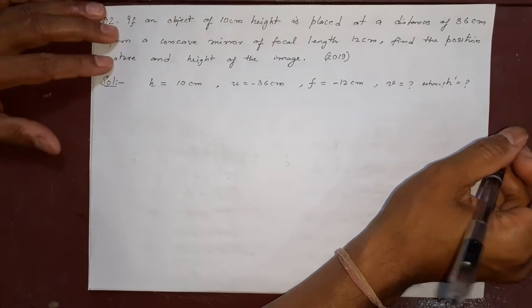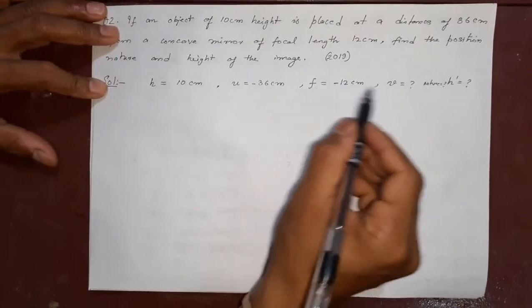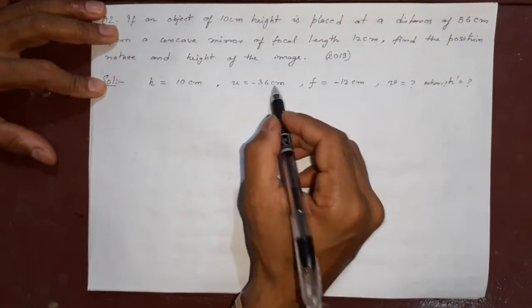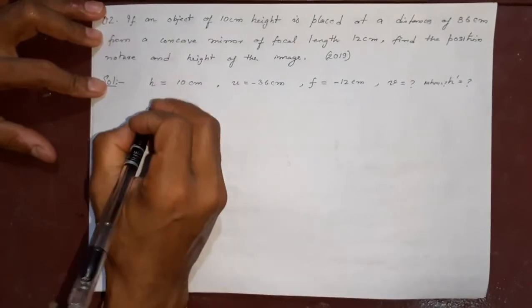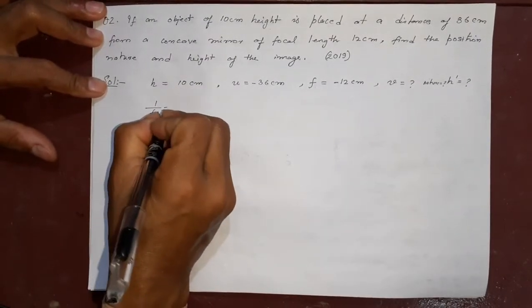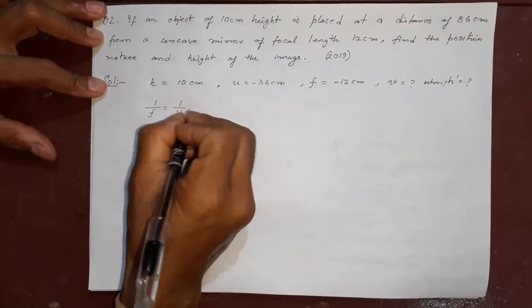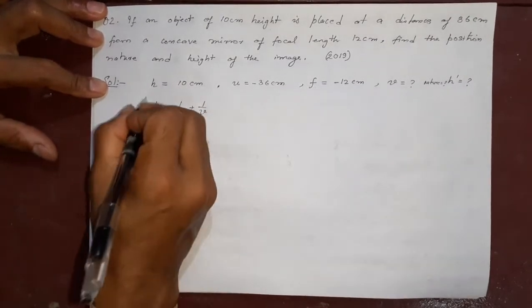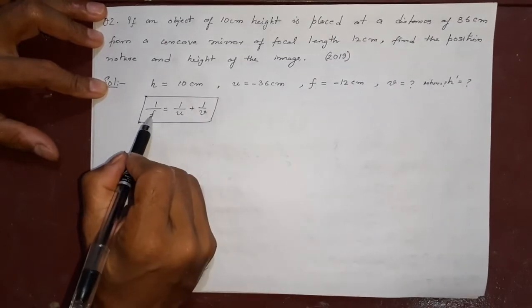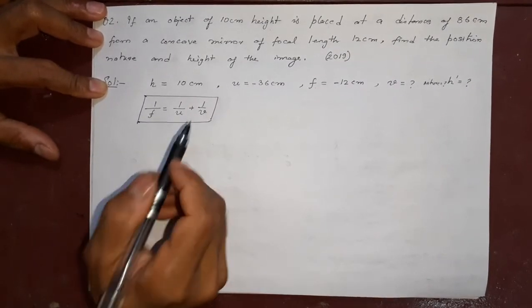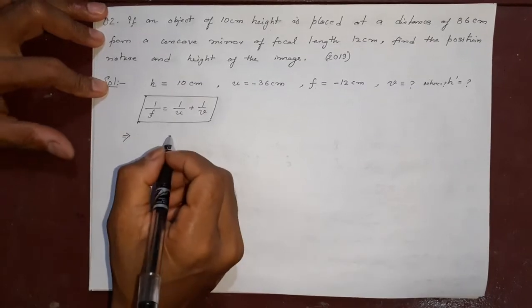So let us start. u, f, v, so you can use mirror formula. Remember, it is mirror, don't confuse with mirror and lens. 1 by f equal to 1 by u plus 1 by v is the formula you are going to use first because here two things are known, these two things are known, this you have to find.